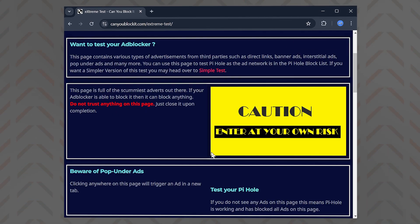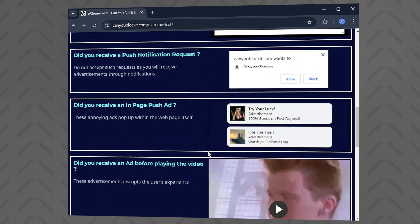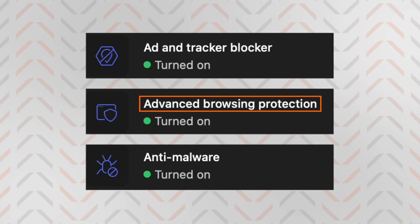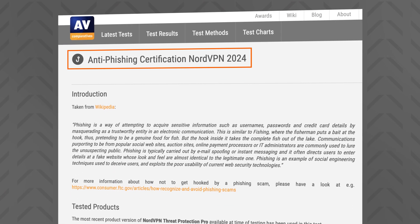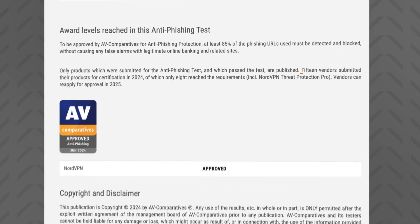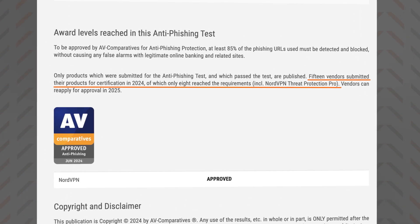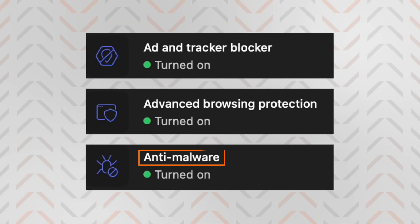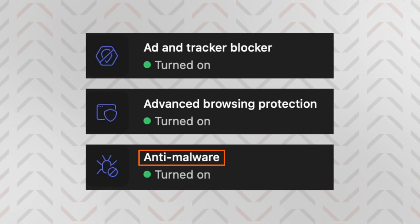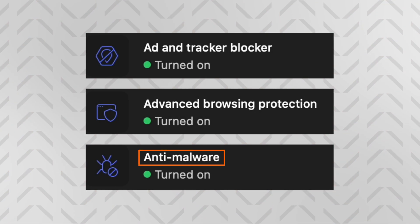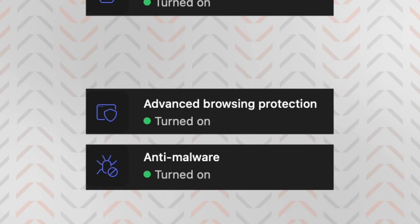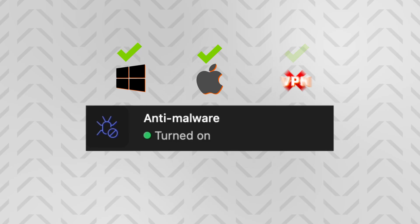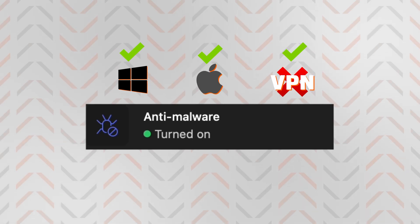Layer one: it blocks annoying ads and trackers — really effective, not just on regular banners, but on popups and video ads too. Layer two: it checks websites for scams, malware and phishing attempts. It was even certified by AV-Comparatives, while AV-Test declared it the best anti-malware solution amongst other VPNs with similar features. Layer three is a full-on malicious file detector, which specifically checks the files that you download. This extensive protection is so far only for Windows and macOS users, and it works without a VPN connection.